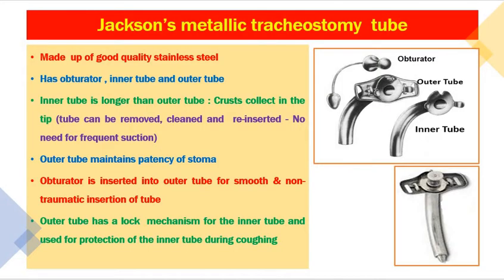Tracheostomy tubes can be divided into metallic and plastic (polyvinyl chloride) tubes. The first metallic tube is Jackson's metallic tracheostomy tube, made of good quality stainless steel. It has an obturator, an inner tube, and an outer tube. The inner tube is longer than the outer tube so that crusts collect at the tip of the inner tube. The inner tube can be removed, cleaned, and reinserted, so there is no need for frequent suction. The outer tube maintains patency of the stoma.